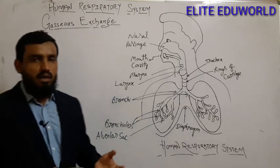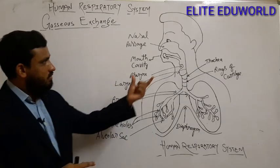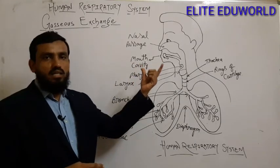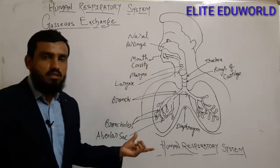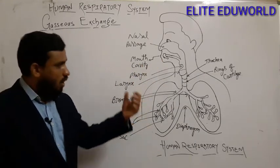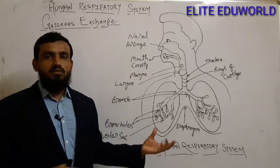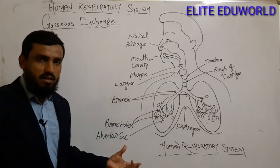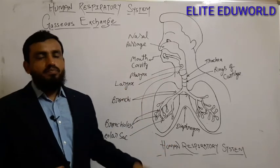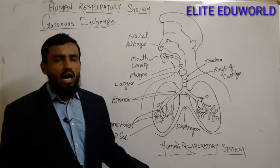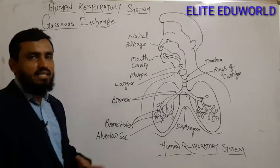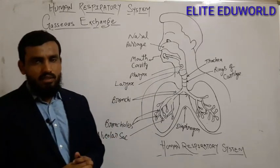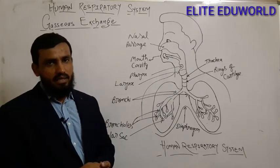Now in this section we will purely see the structure of the human respiratory system — the organs which are responsible for human respiration — and how the exchange of gases will happen.